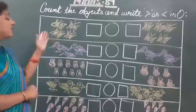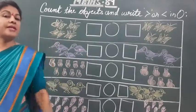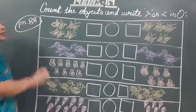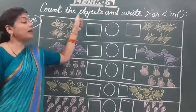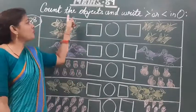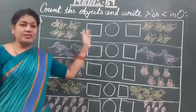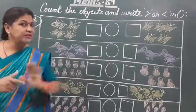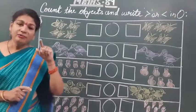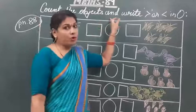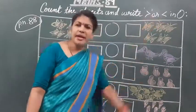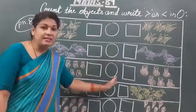Today, this activity is also taken from your book, page number 88. I am writing page number 88 and the given question is: count the objects. Count means what? Count the objects — kuch cheezay di gai hui hai. Aur un cheezo ko dekkar aapko first mein kya karna hai? First, we will count the objects. And then write the less than and greater than signs in the circles.